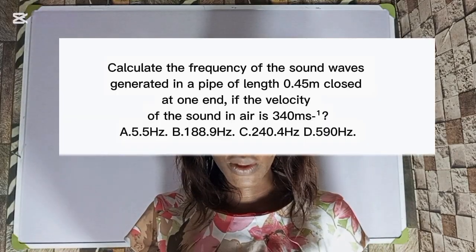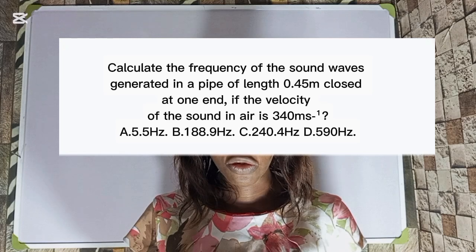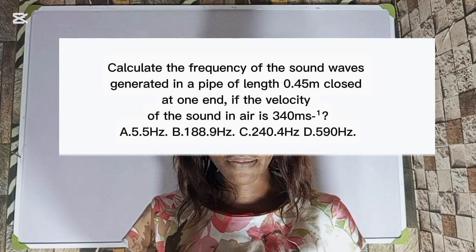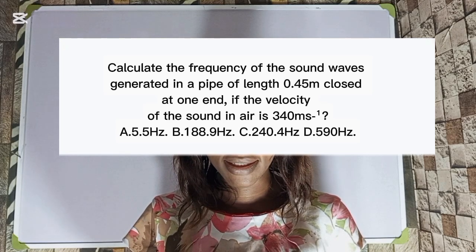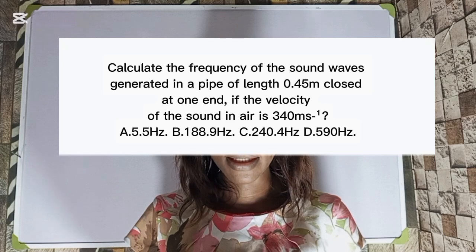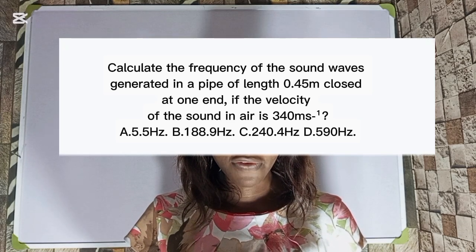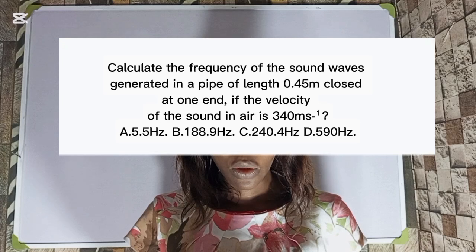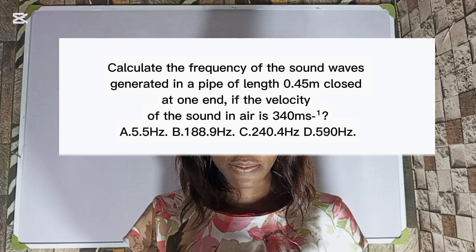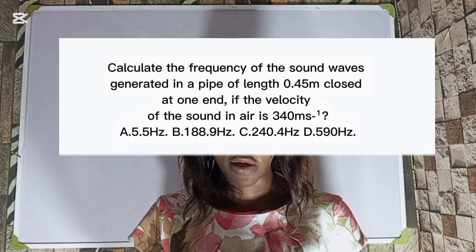Calculate the frequency of the sound wave generated in a pipe of length 0.45 meters closed at one end, if the velocity of the sound in air is 340 meters per second. Option A: 5.5 Hz. Option B: 188.9 Hz. Option C: 240.4 Hz. Option D: 590 Hz.